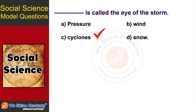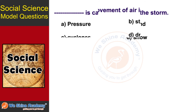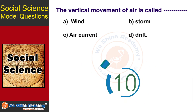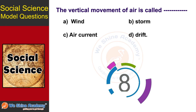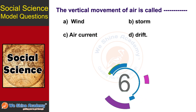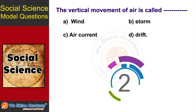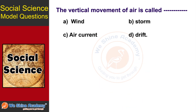The next question is: the vertical movement of air is called dash. In 10 seconds, find the answer. The answer is Option C: Air current.